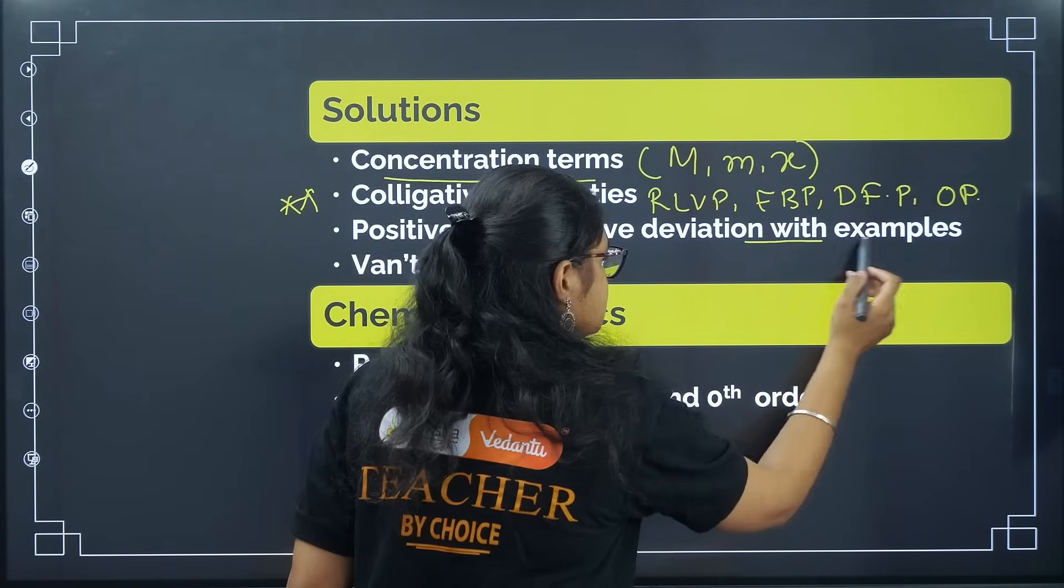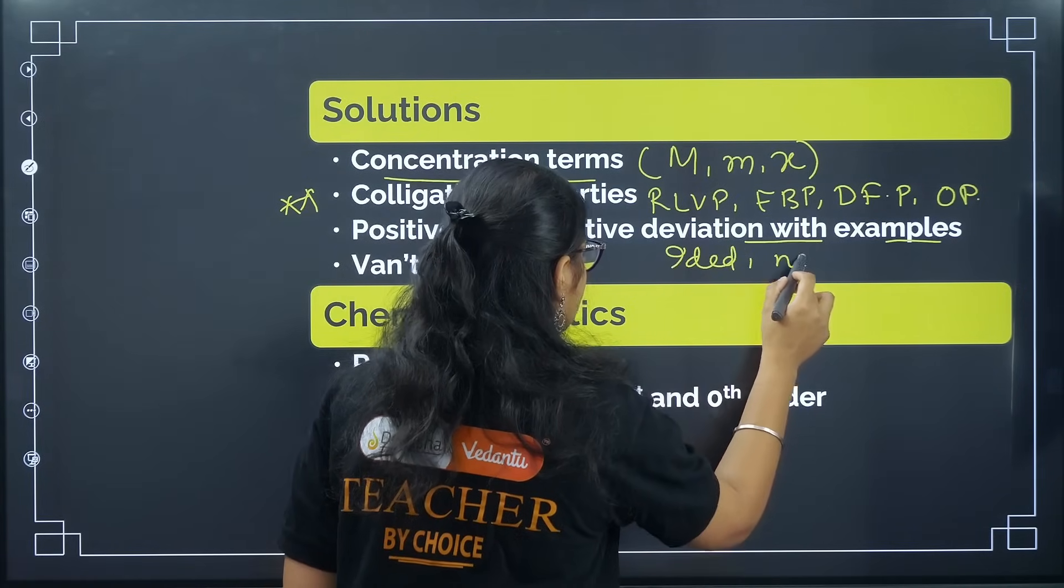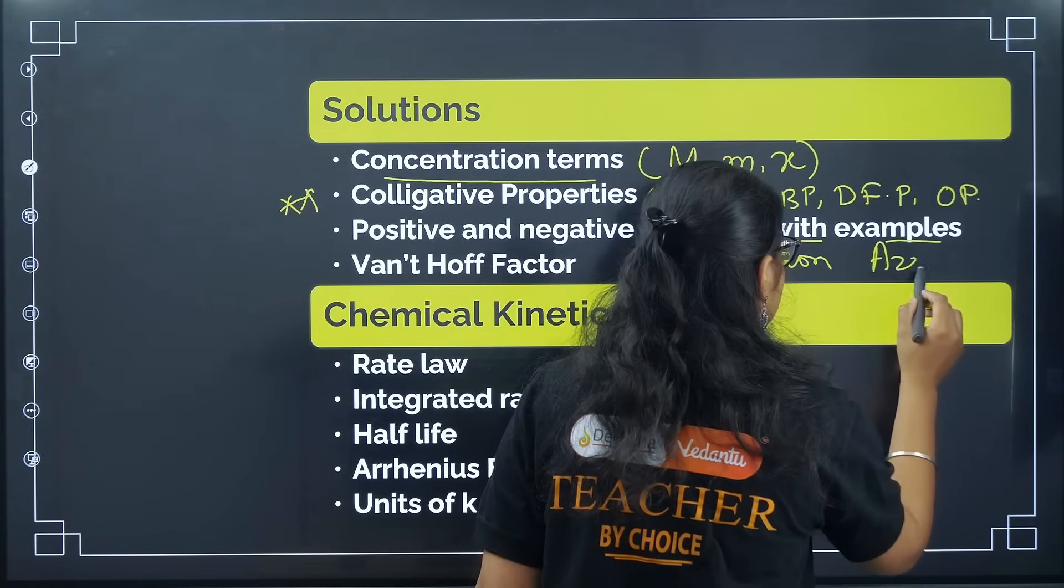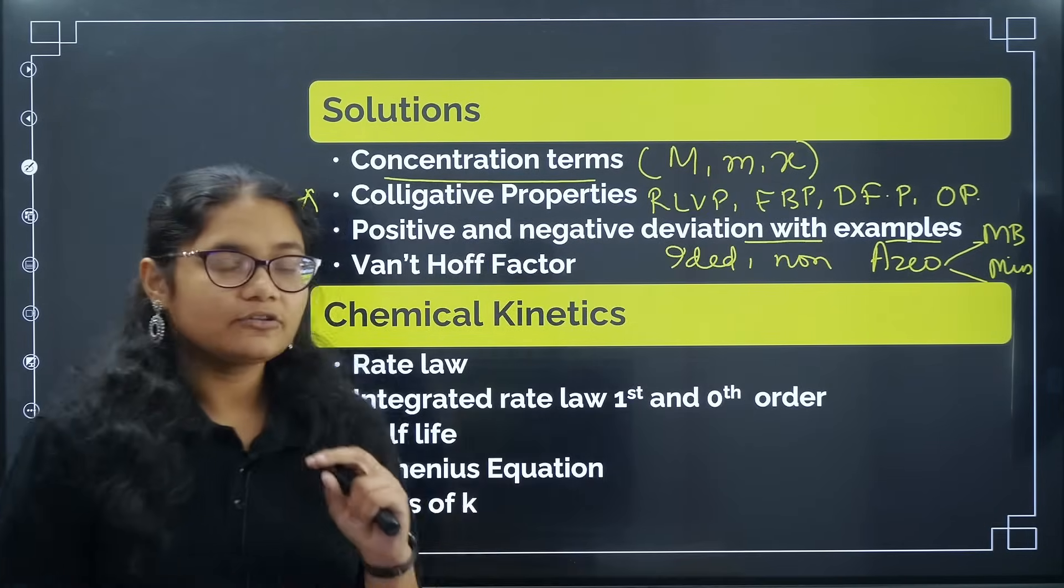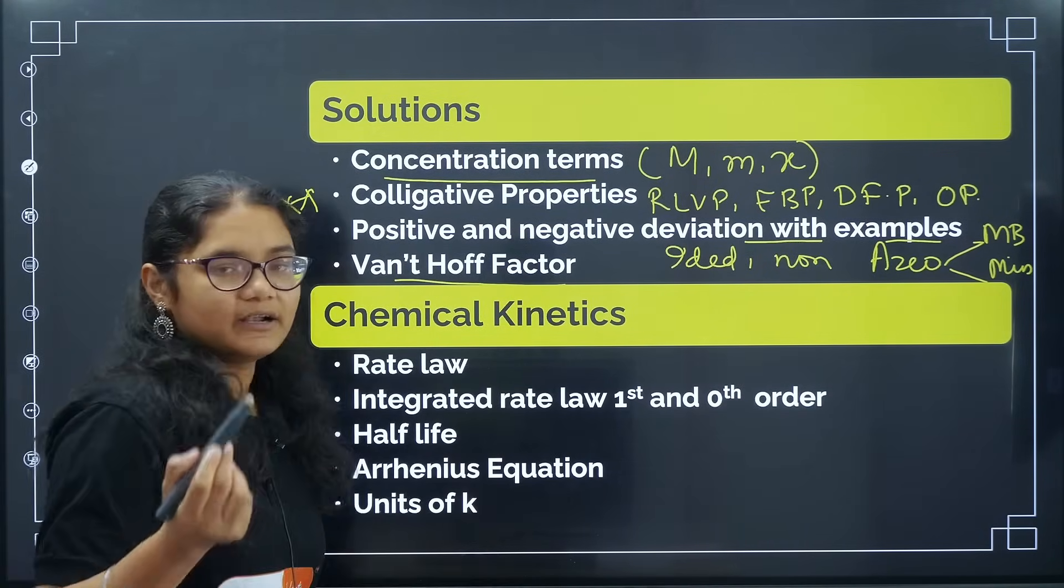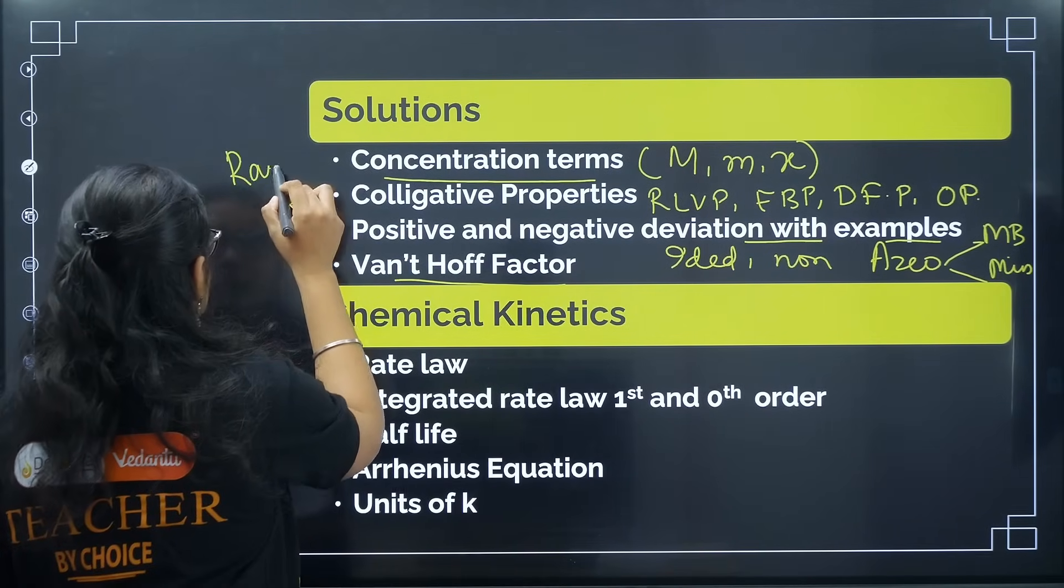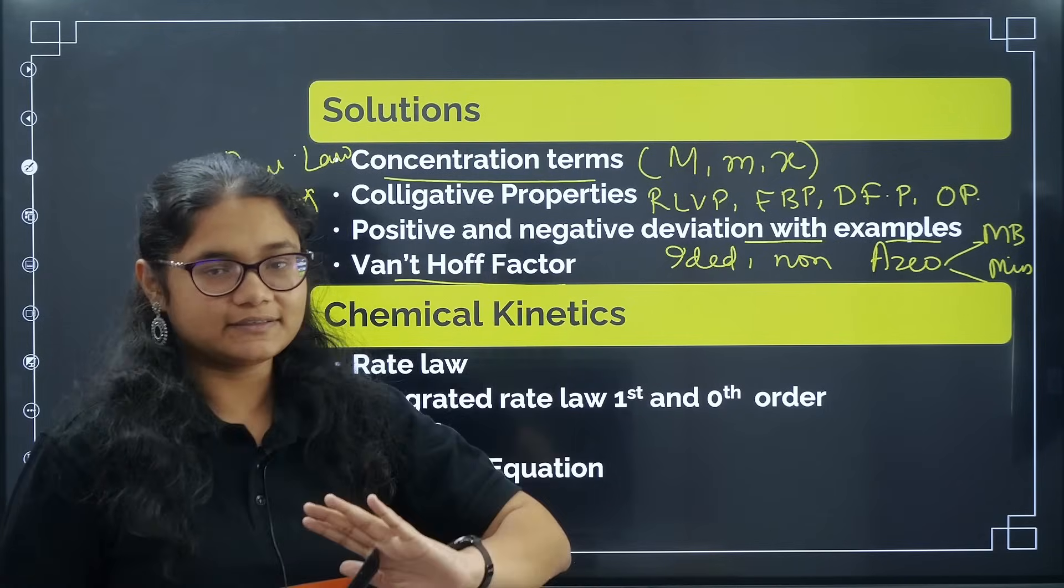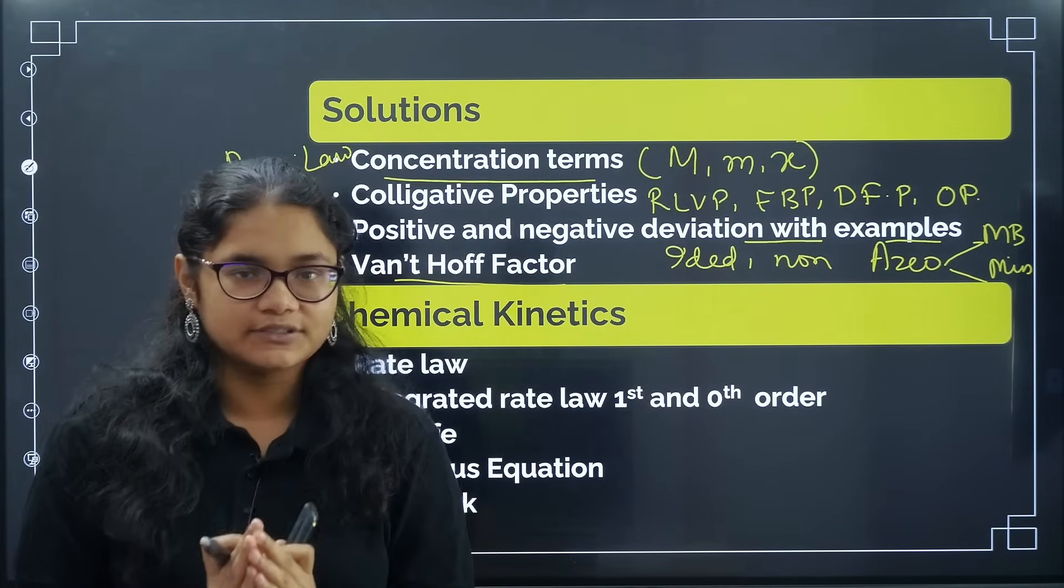Next, positive and negative deviation with examples. You should also study ideal and non-ideal examples, including azeotropic mixture with maximum boiling and minimum boiling azeotropes. Just remember one example for each. Coming to Van't Hoff factor - Van't Hoff factor for dissociation and association, how to calculate that. And one more thing is Raoult's law. It will take hardly five to six minutes to revise these all concepts from this chapter. You can dedicate 10 minutes to revise solutions chapter and all the formulas.